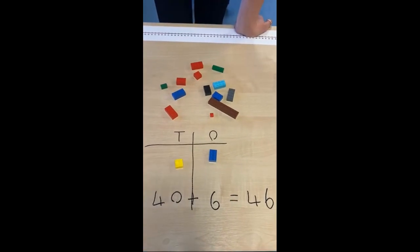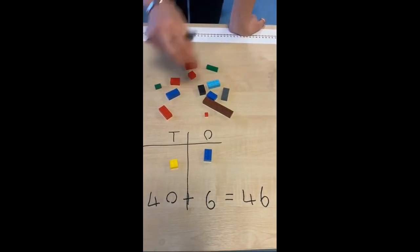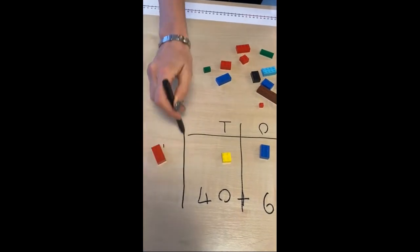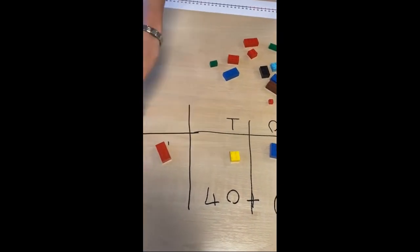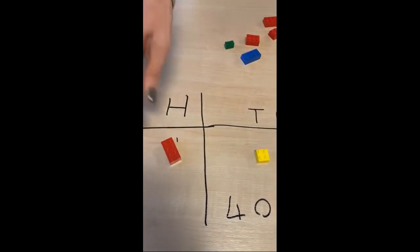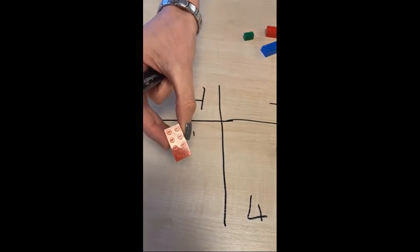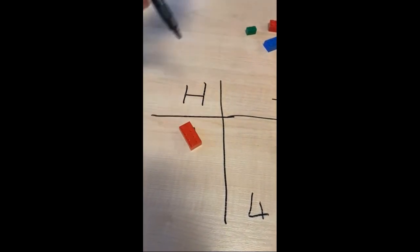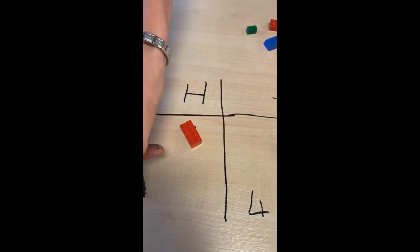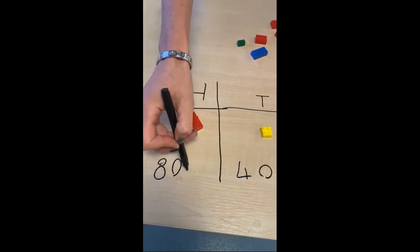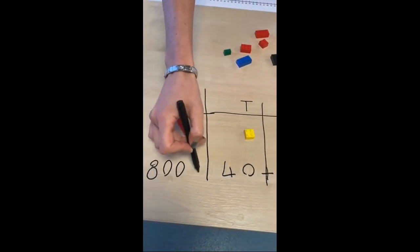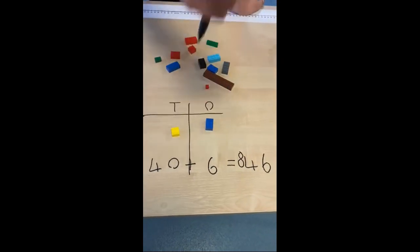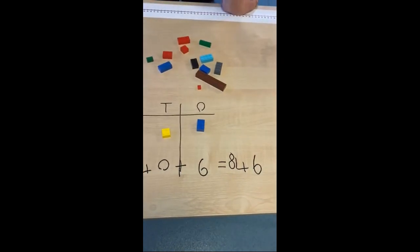Some of you might want an even bigger challenge — you could actually make three-digit numbers. What's the value of these hundreds? We've got two, four, six, eight — eight hundred and forty-six. Why don't you have a go at home? Over to you.